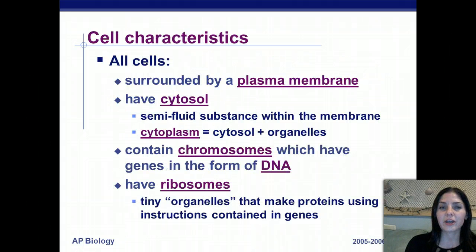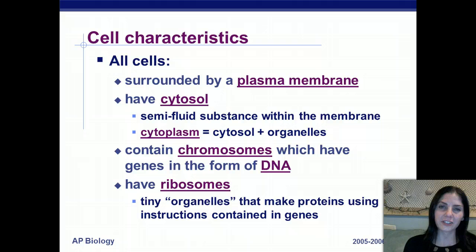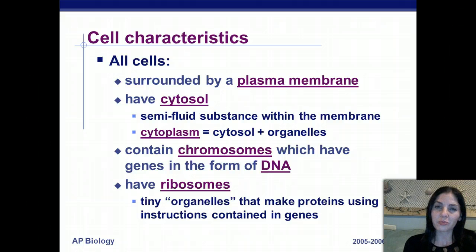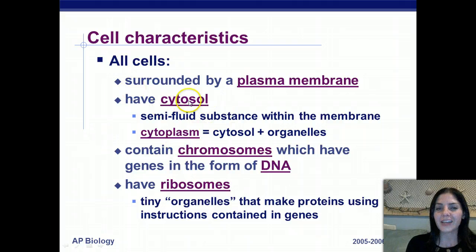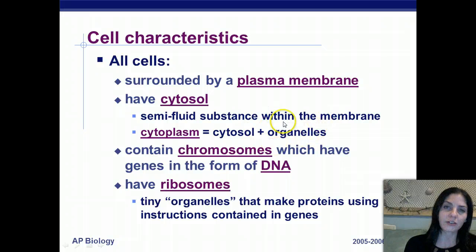Cell characteristics: all cells are surrounded by a plasma membrane, and they also have cytosol, which is a semi-fluid substance within the membrane. Cytoplasm is actually the cytosol along with all the organelles inside of it — comparable to how blood has plasma.